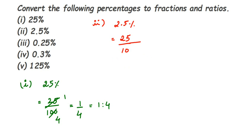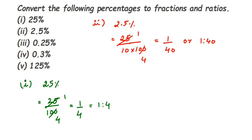Since we already have 10 in the denominator and we need to divide by 100 again, both numbers in the denominator get multiplied together. So we have 25 upon 10 times 100, which gives 25 upon 1000. Cancelling using the 25 times table — 25 ones are 25, 25 fours are 100 — this equals 1 by 40. This is the reduced form. As a ratio it will be 1 is to 40.